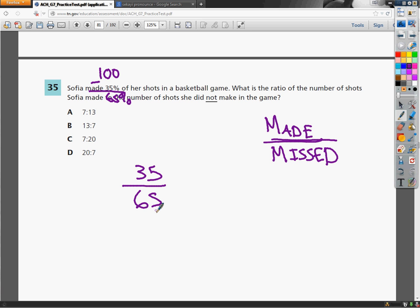Now if I take that and plug it into the calculator as a fraction, which is what ratio is, it should reduce down to 7 over 13, which seems to make a lot of sense, because we're doing numbers of shots she made versus ones she did not make. 35% means she made less than half, so the number on top should be smaller.